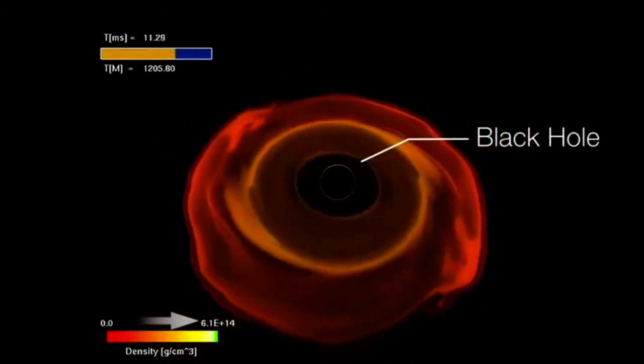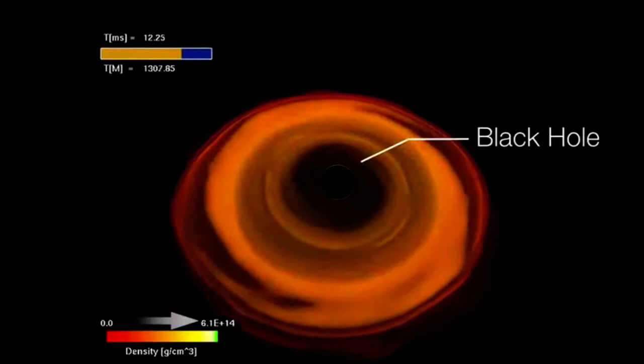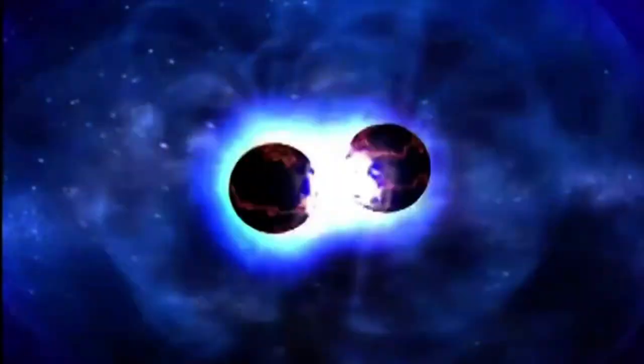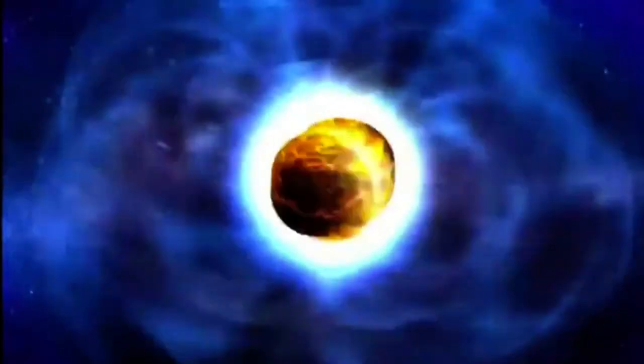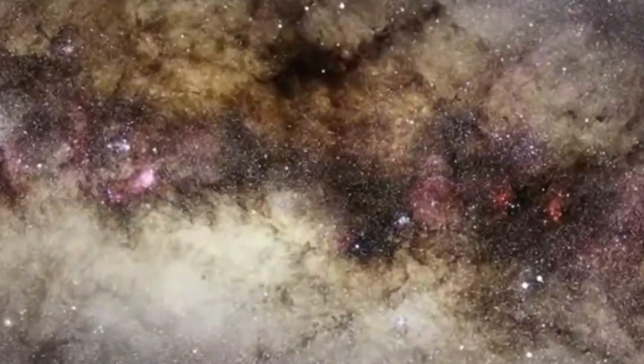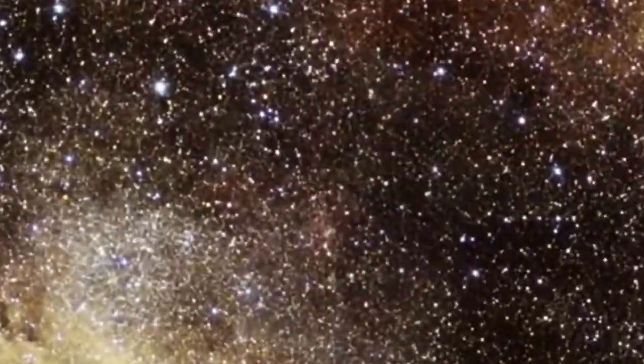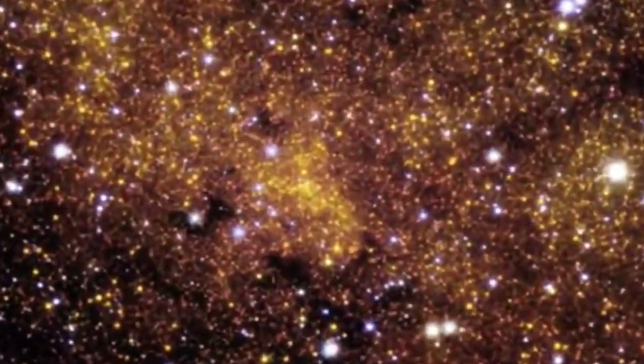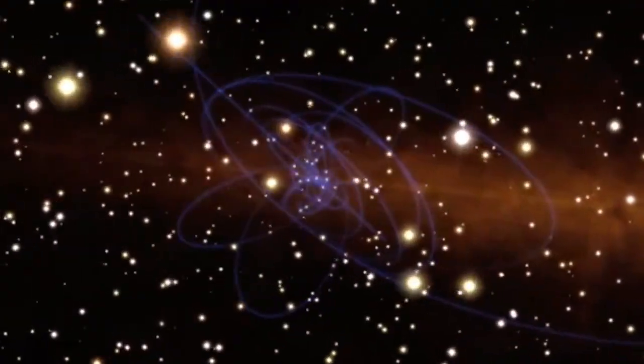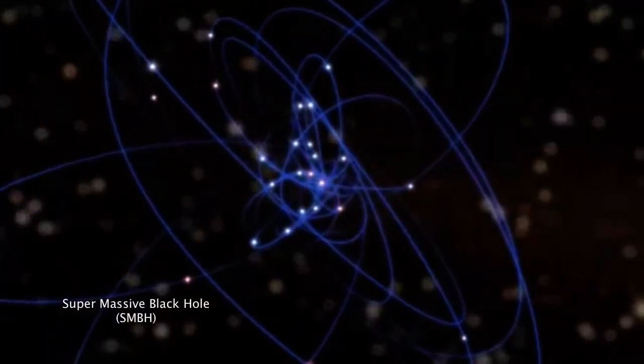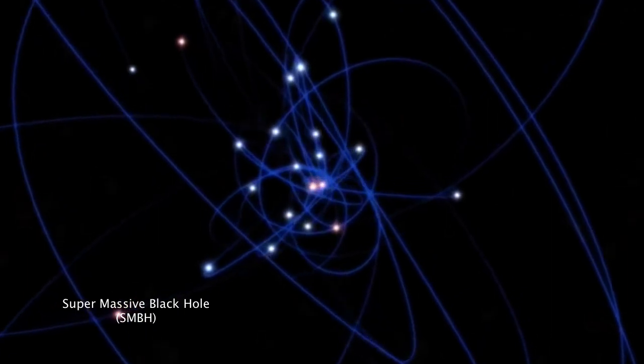Black holes can form from the collapse of exceedingly large stars. They can also form when two neutron stars crash into each other. And guess what we likely have at the center of our galaxy, where stars are so abundant that the idea of night and day makes no sense? Yes, it's a black hole, but one with a mass of about 4 million times that of our Sun. We call that a supermassive black hole, an SMBH.